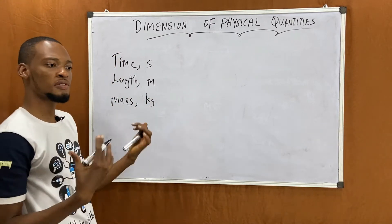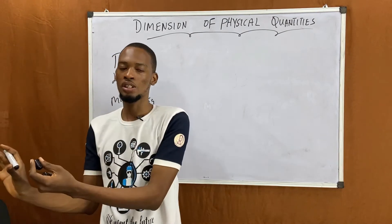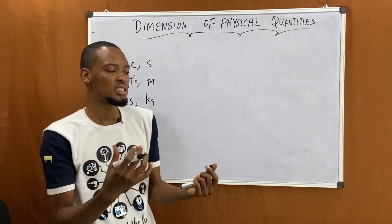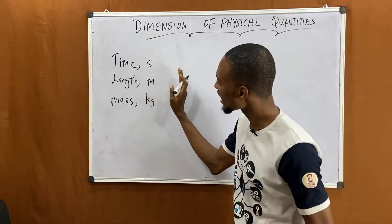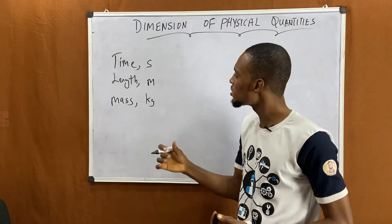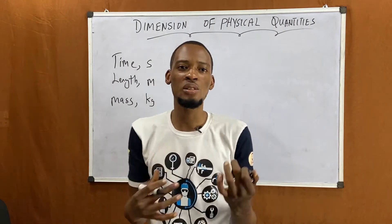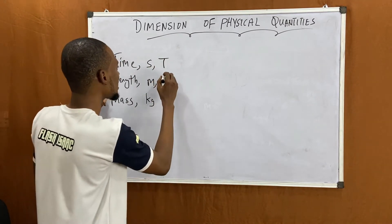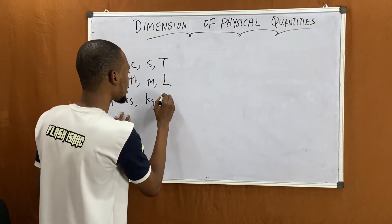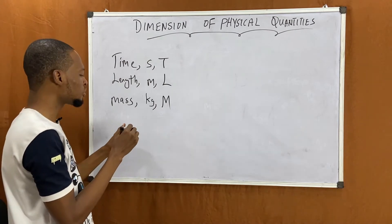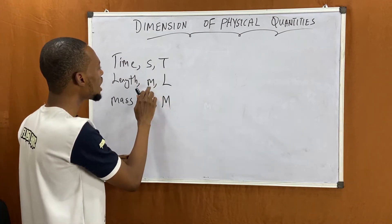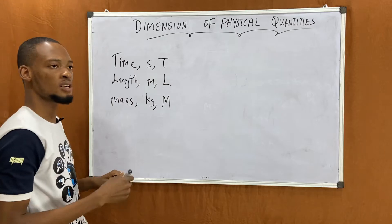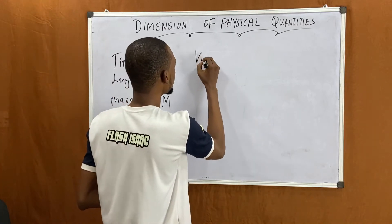Now we are expressing them in terms of dimensions and using them to derive other quantities — the same way we got the derived quantities. But in dimension, we use the dimensions of time, length, and mass instead of s, m, and kg. So in dimension we use T for time, L for length, and M for mass. While solving, instead of putting s for time, m for length, and kg for mass, we use T, L, and M respectively.